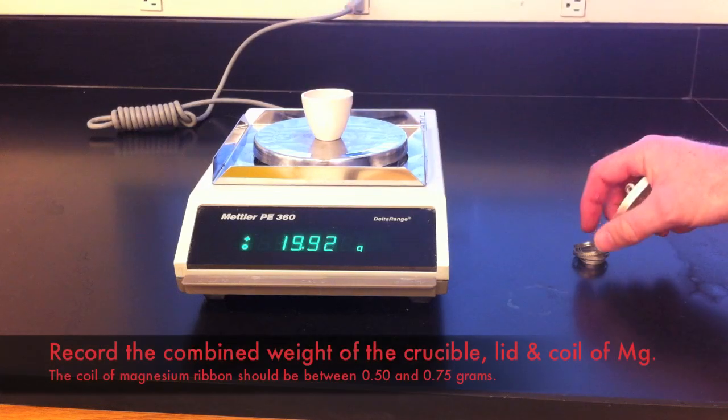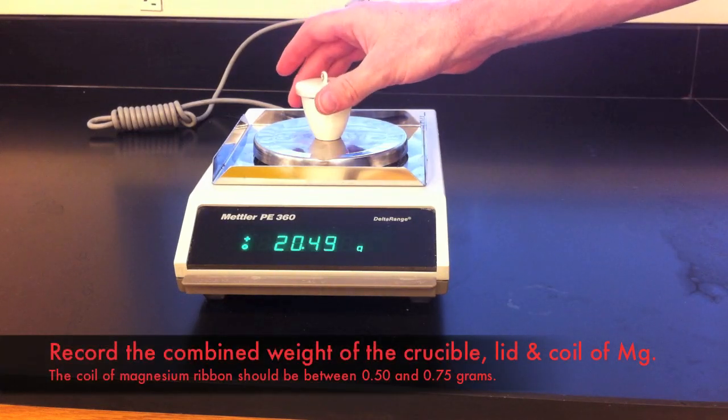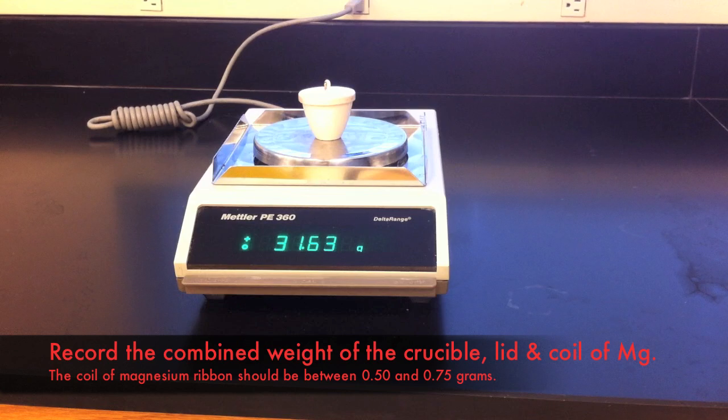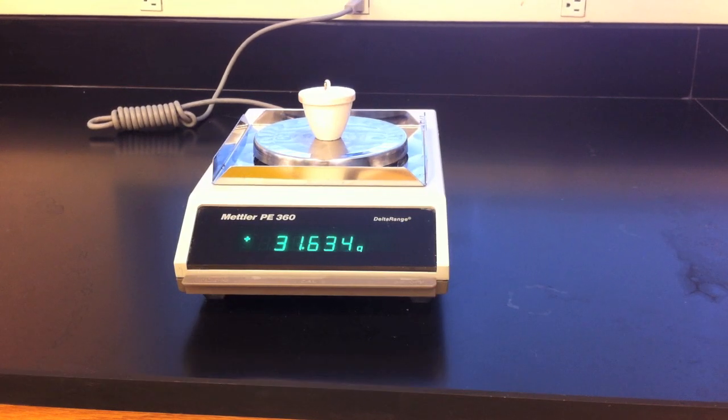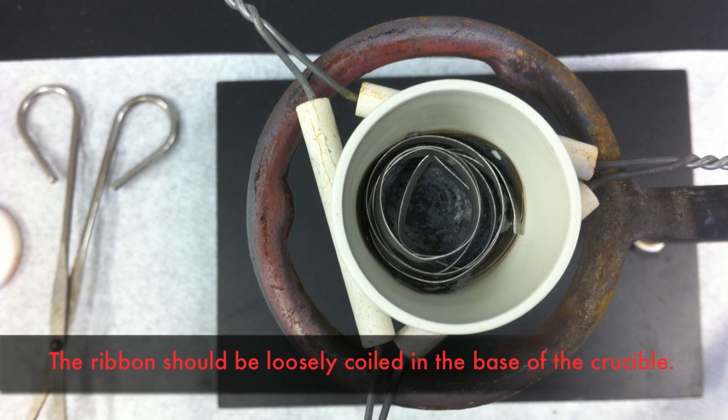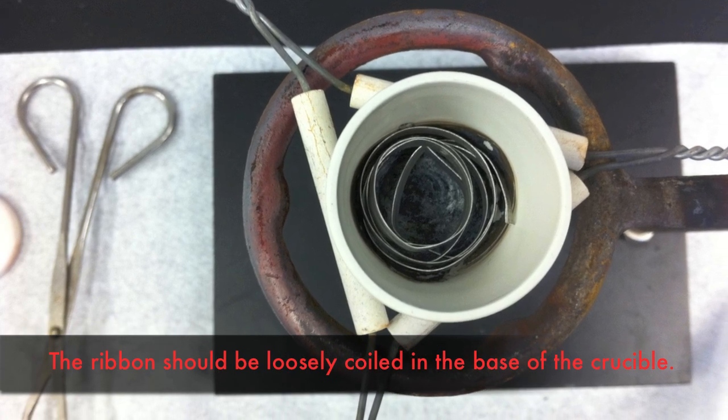Once you have recorded the weight of the crucible and the lid, add in the magnesium ribbon and record the combined weight. The weight of the ribbon should be about 0.5 to 0.75 grams. Do not wrap the magnesium ribbon too tightly. Air needs to get in for the reaction to take place.